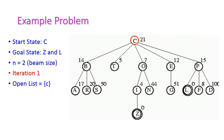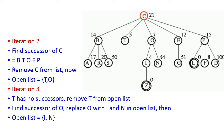Now let us see one example problem for the beam search algorithm. In this diagram, C is the root node — the starting state. Two goal states are present: the first one is Z and the second one is L. The beam size is given as N equal to 2. In iteration 1, we start from the root node, so the open list contains only C. Now we need to expand C.